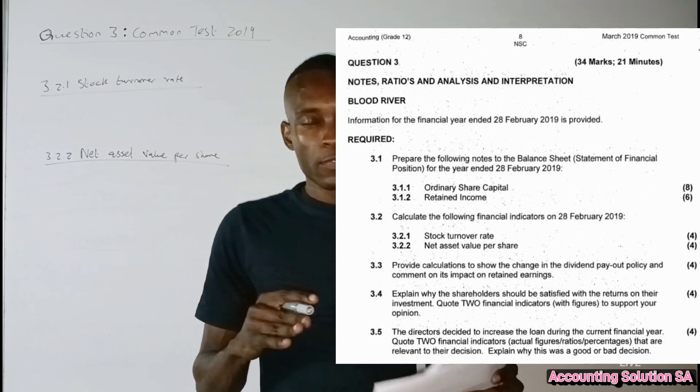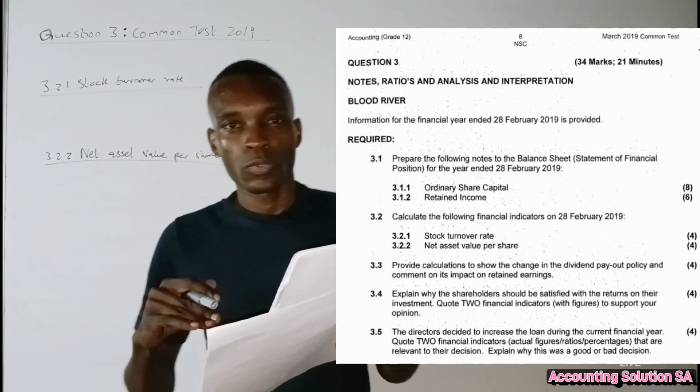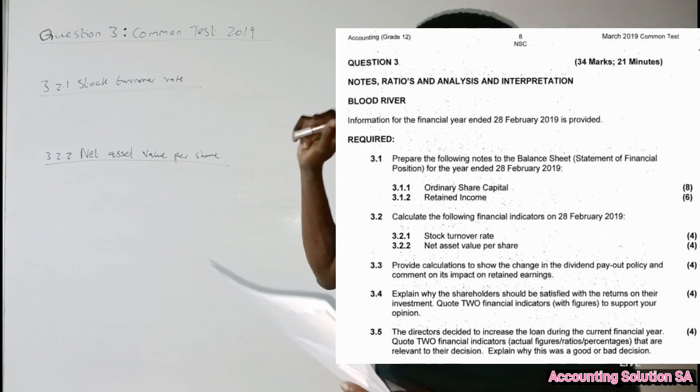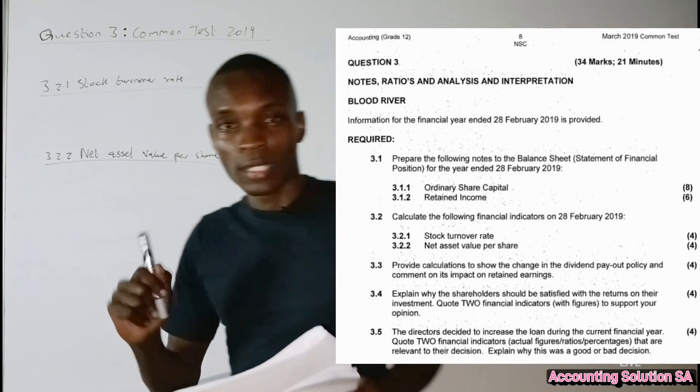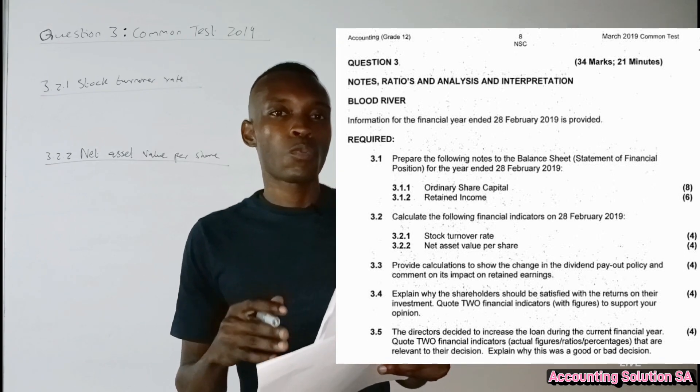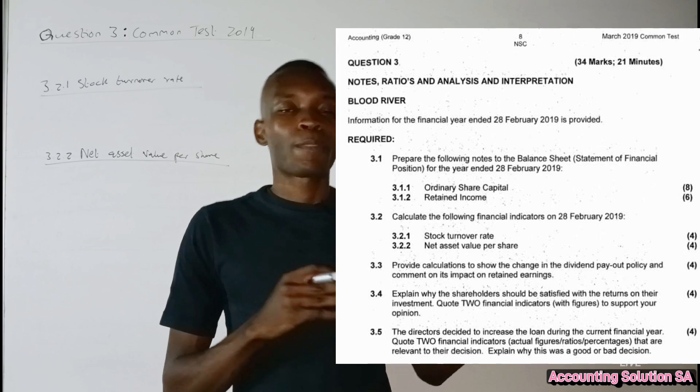Hi Grade 12, in this video I decided to do the last part for the question paper which was written in March 2019. So it was a common test. I did question one, question two, question three for retained earnings notes and share ordinary capital notes.